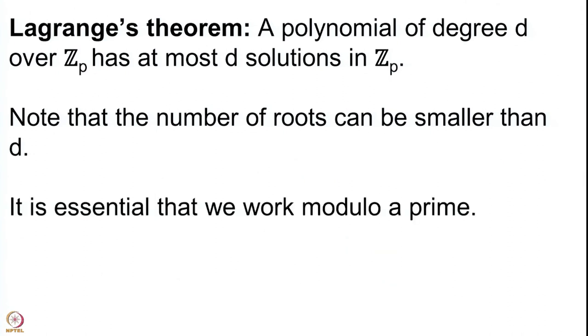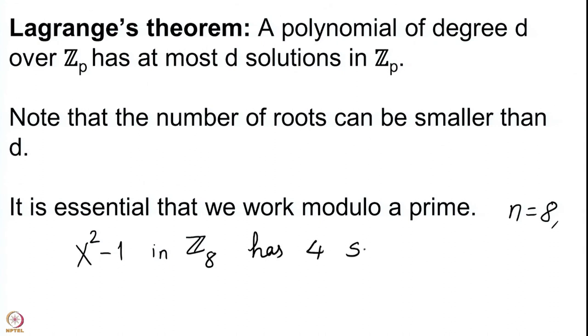It is important that you work modulo a prime. If you take n = 8, the equation x² ≡ 1 mod 8 has 4 solutions: 1, 3, 5, and 7 — which is bigger than the degree 2. So if you work modulo a composite number, Lagrange's theorem need not hold. We will see a very simple proof of Lagrange's theorem in the next lecture and then do more analysis with the set Zp*.